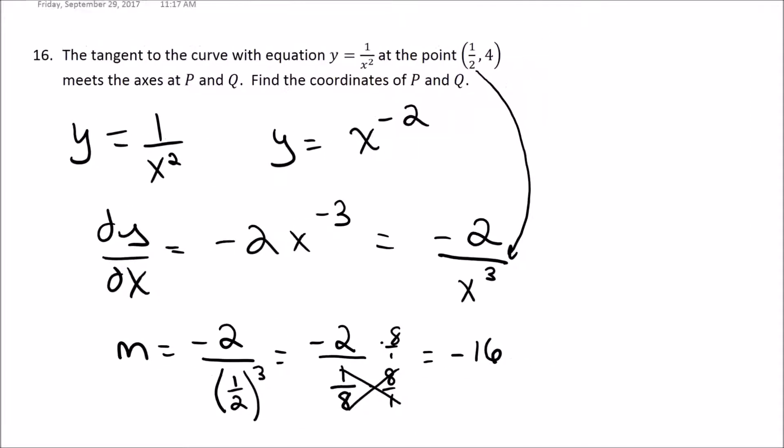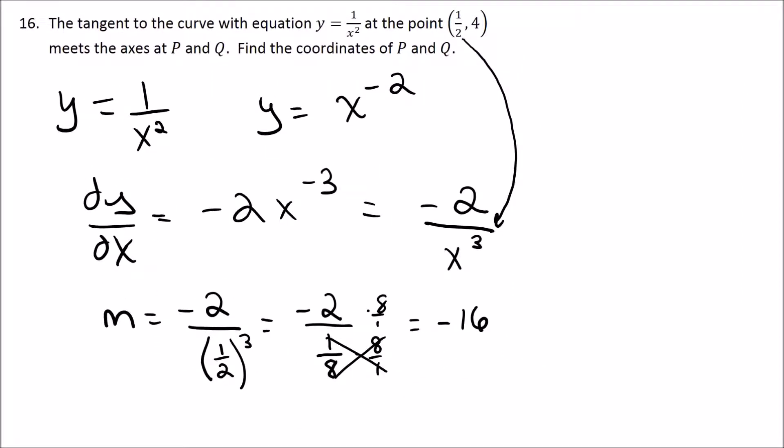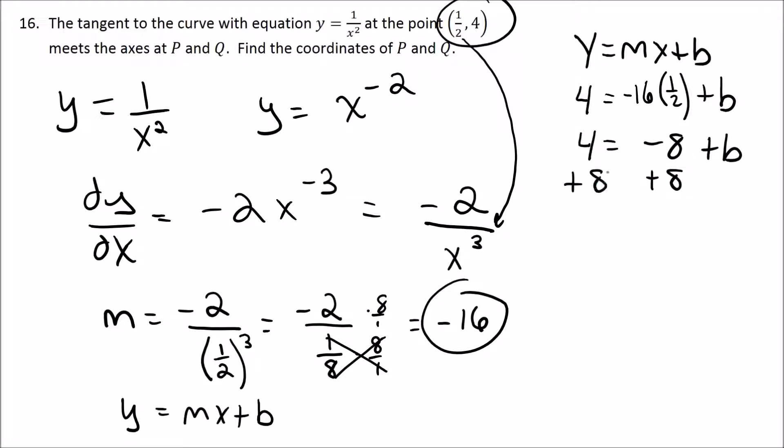So the slope of our line is negative 16. Now we need to get what the full equation would be. Let's use y equals mx plus b. I'm going to substitute in this point and my slope, so the y value is 4, the slope is negative 16, the x value is 1/2, and we're going to solve for the b value. We wind up with 4 equals negative 8 plus b, and I simply add 8 to get b equals 12.